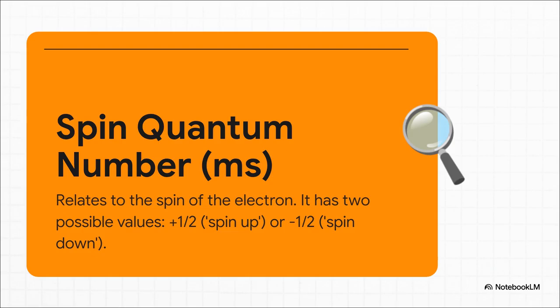And that's what the spin quantum number, ms, is. It's almost shockingly simple. It can only have one of two values. You can think of it as spin up, which we call positive one-half, or spin down, negative one-half. Every single electron in the universe has one of these two spins. That's it.